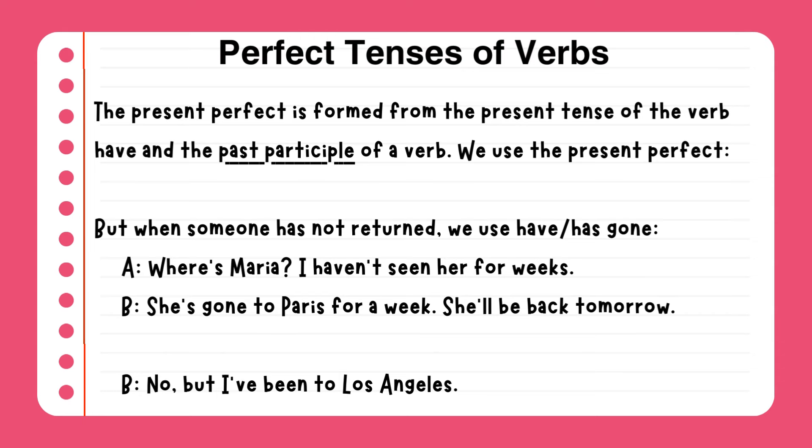But when someone has not returned, we use have or has gone. Example: Grace Maria — I haven't seen her for weeks. She's gone to Paris for a week. She'll be back tomorrow.